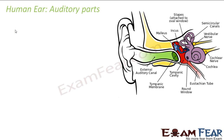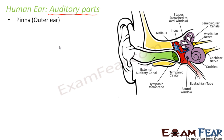Now, what are the auditory parts of the human ear? In this lesson we will restrict ourselves only to the auditory parts — that means the parts of the human ear which enable us to hear. Auditory means hearing, so we will look at the parts of the ear which actually help us in hearing.